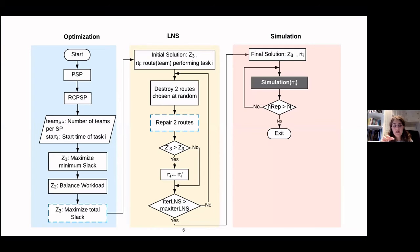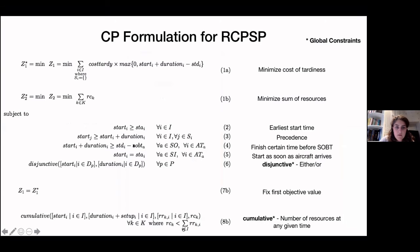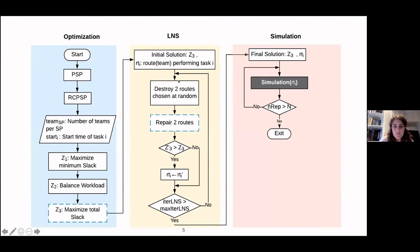We use LNS with an initial solution, applying large neighborhood search by destroying two routes and repairing those routes using the CP model with the maximizing total slack objective. After that, we evaluate the solution using a discrete event simulation.